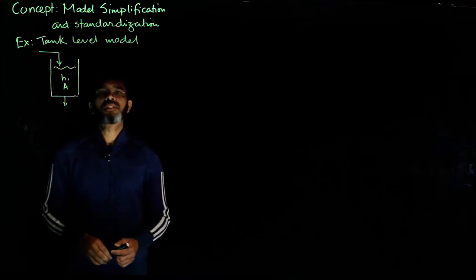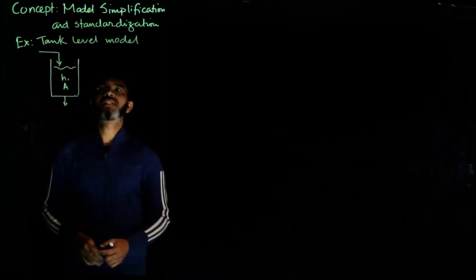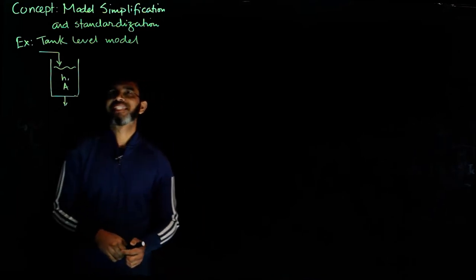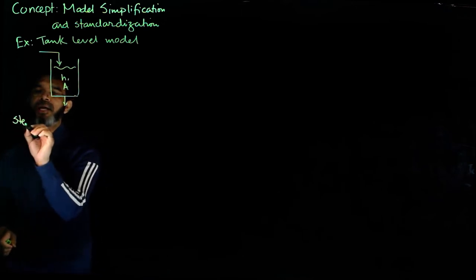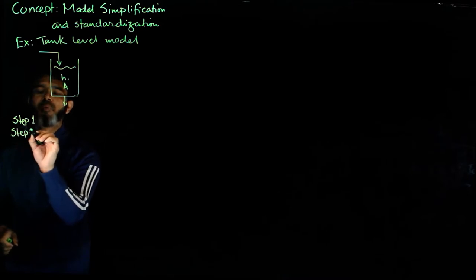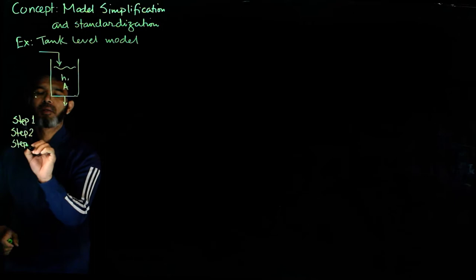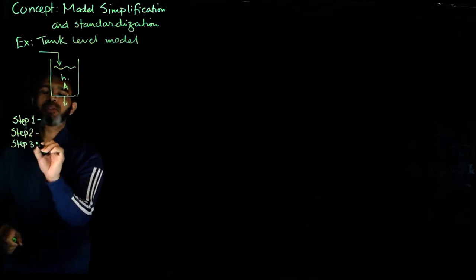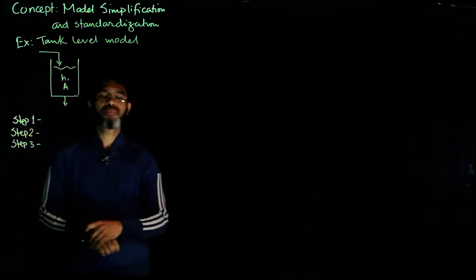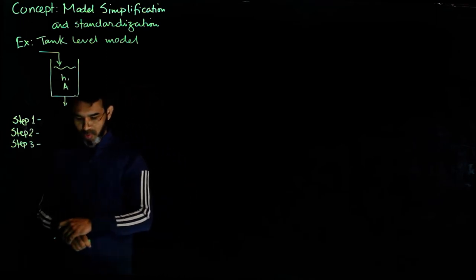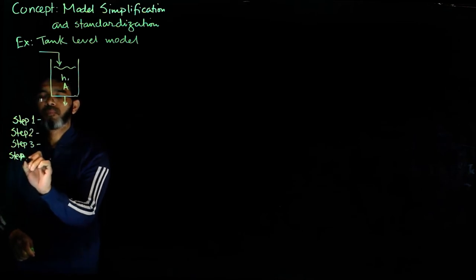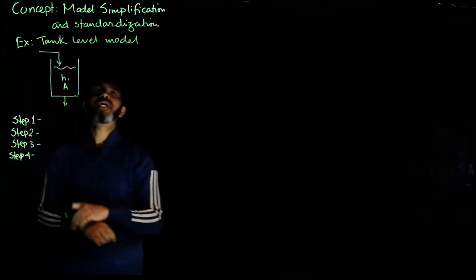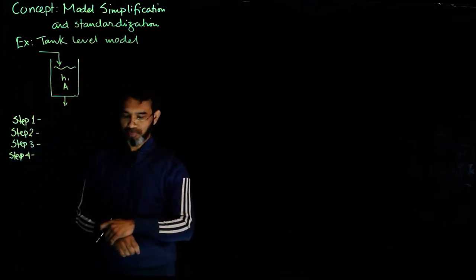In this session we covered the topic on model simplification and standardization. We take the simple example of this tank level model. We have seen in step 1, so far we have done step 1, 2 and 3, where step 1 was to define the objective, step 2 was to gather process knowledge, step 3 was to develop the model equations. We need to look at step 4 today, which is model simplification and standardization.